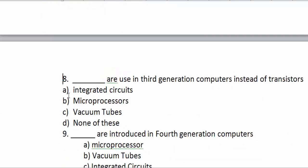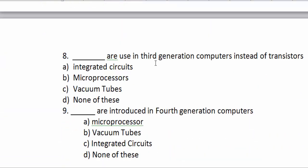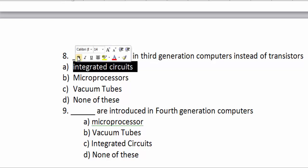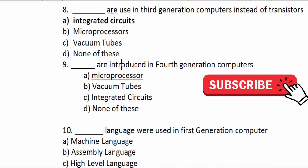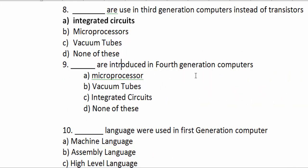Third generation computer used integrated circuits instead of transistors. This is what we use — integrated circuits — in the third generation computer.